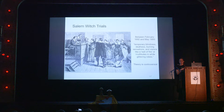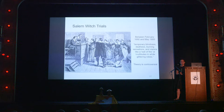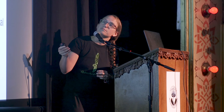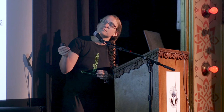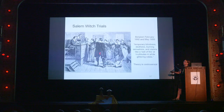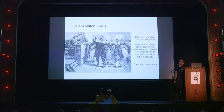There is a hypothesis — and it's just a hypothesis — that the Salem witch trials could have resulted from a really rainy year that caused an outbreak of ergotism. Historical accounts describe temporary blindness, burning sensations, visions like a ball of fire, and multitudes in white glittering robes. Scientists looked back at historical records and found it was really wet the year before, and they were eating lots of rye and other grains susceptible to Claviceps — potentially leading to the Salem witch trials through ergotism.